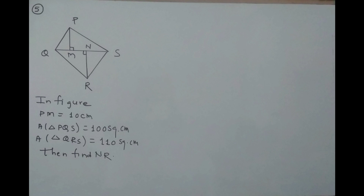In the figure, PM is 10 cm, area of triangle PQS is given as 100 cm², area of triangle QRS is 110 cm². You are asked to find NR. Here in the figure I can see two triangles: triangle PQS and triangle QRS. If I consider triangle PQS, QS is the base and PM is the height. If I consider triangle QRS, QS is the base and RN is the height. So both triangles have a common base.